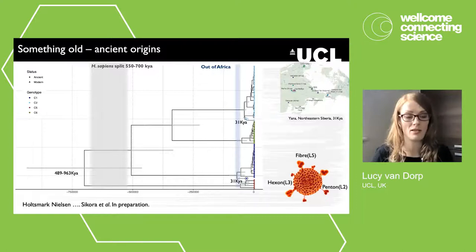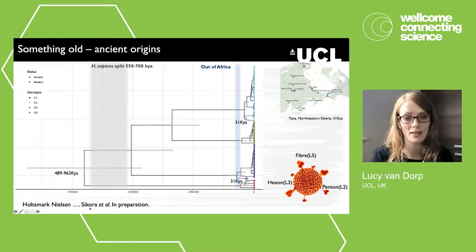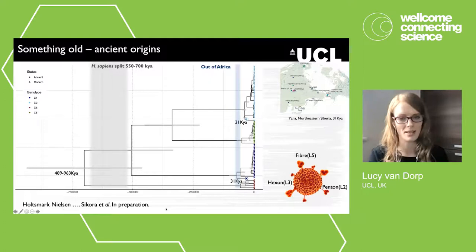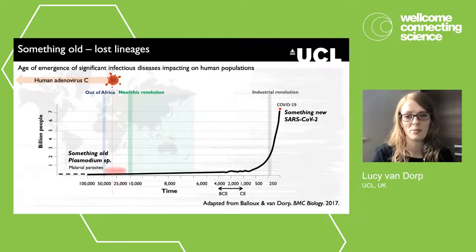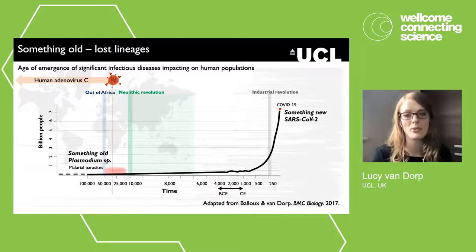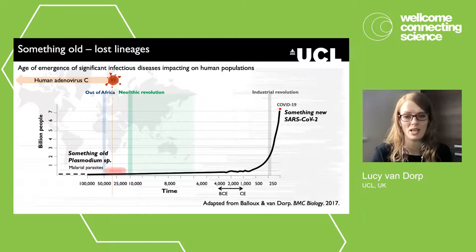This work is being led by Martin Sikora in Copenhagen and Sophie Holtzman Nielsen. The results are consistent with a very ancient association and divergence of adenoviruses — observable directly in DNA sequencing reads from archaeological remains, but also estimated using computational methods. We are quite possibly only just scratching the surface of the oldest human pathogen genomes we'll be able to obtain, and this will certainly yield insights from even deeper time periods.